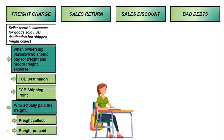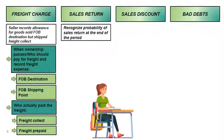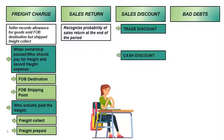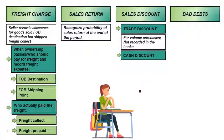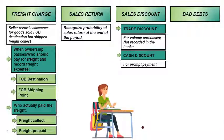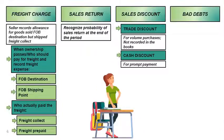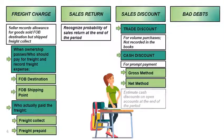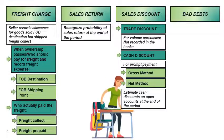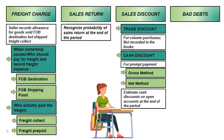An allowance for sales return is estimated at the end of the reporting period and reversed at the beginning of the subsequent period. Sales discounts can be either trade discounts or cash discounts. Trade discounts are granted for volume purchases and are not recorded in the books. On the other hand, cash discounts are granted to customers for prompt payment. Cash discounts are accounted for using either the gross method or net method. An allowance for sales discount is estimated at the end of the reporting period and reversed at the beginning of the subsequent period.